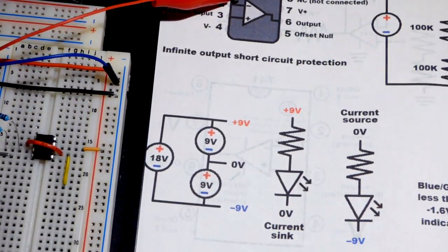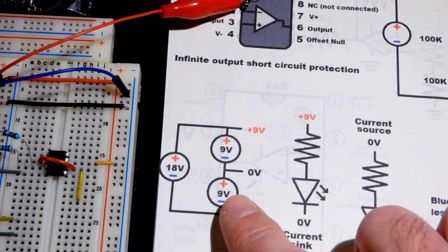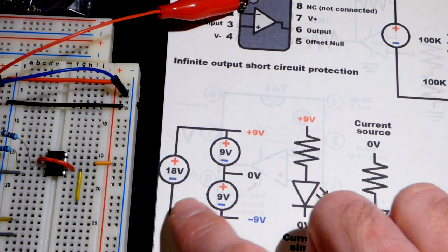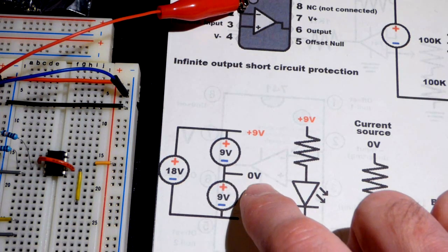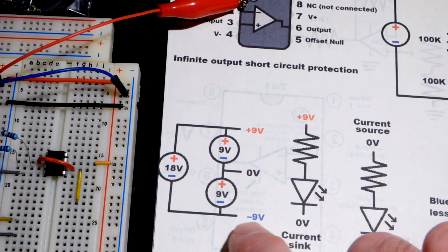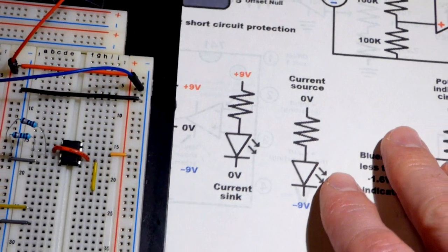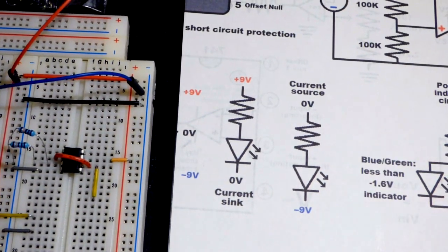I'm just going to quickly go through here - we have 18 volts, the output is 0 volts, the red rail will be 9 volts positive, and the blue rail will be 9 volts negative. We're going to do a polarity indicator circuit to help demonstrate this circuit.